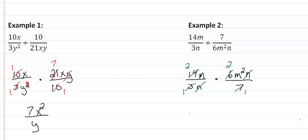So up top we get 2 times 2 which would be 4, and m times m² which would be m³, and we are done.